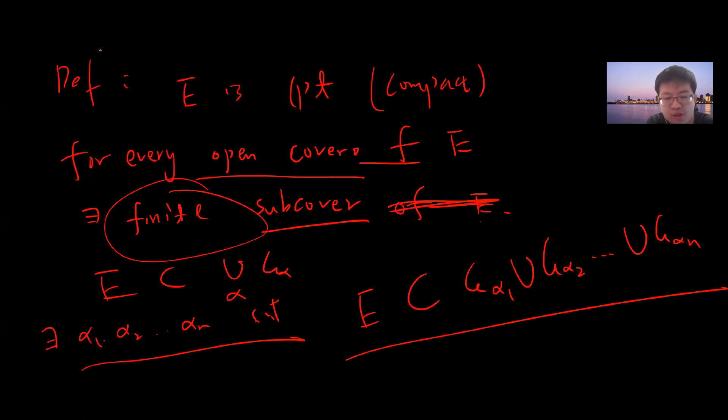In order to prove something is compact, which looks very difficult, you need to show that every open cover contains a finite subcover. This is the difficult part. But we can see some examples — maybe one example which is non-compact.